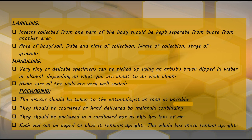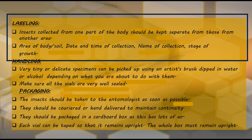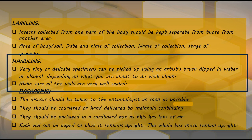Next, we have a proper chain of custody. We have to record the time of collection, name of collector, and stage of growth of the insect. We write the name, the time, the date, and all collection details.